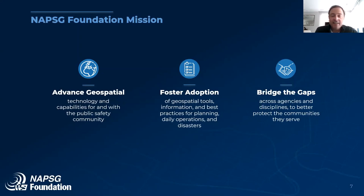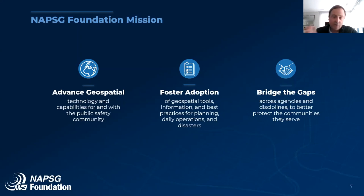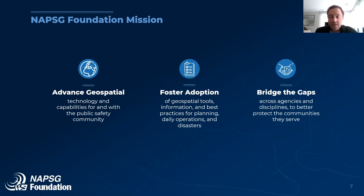And finally, where we bridge gaps — for us as an organization, GIS is glue. It creates a common platform where we can all operate together, whether you're a fire department in a small rural area, a fire department in New York, a police agency, a sheriff, an emergency manager, or a public health official. GIS is the glue that brings us all together, and that single platform is how we serve our community and make it safer. That's the message we want to convey with this new mission statement.